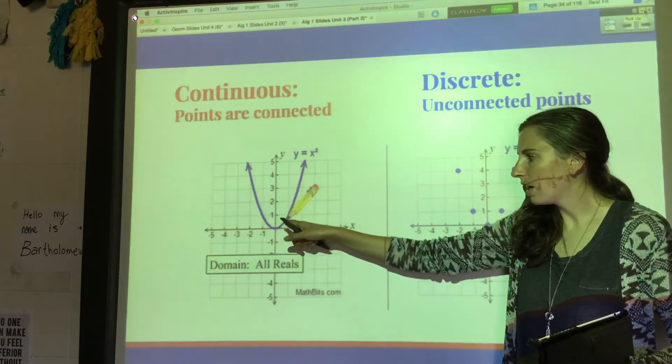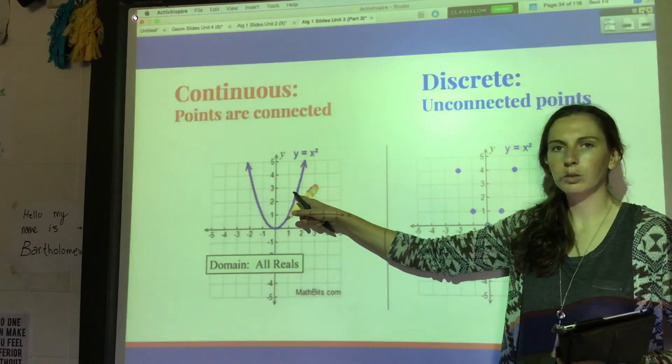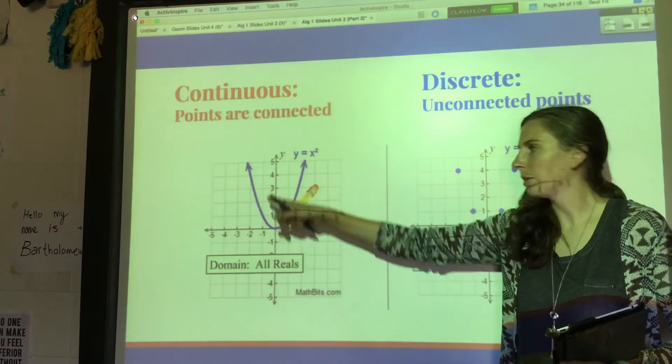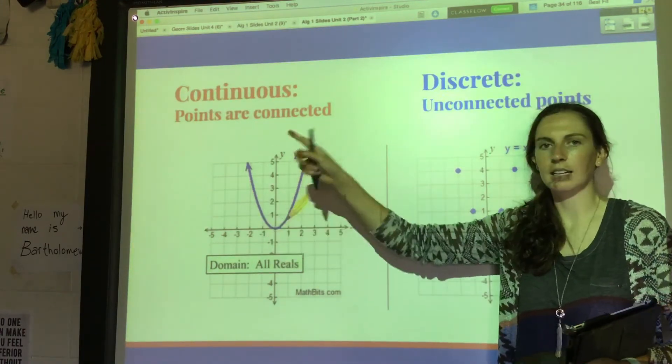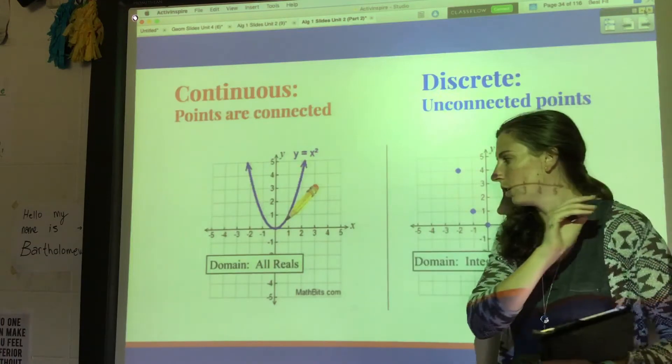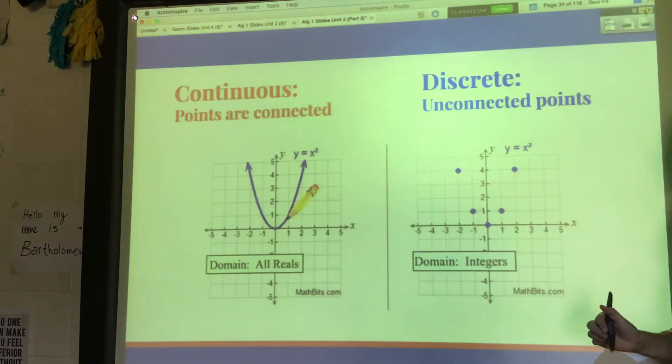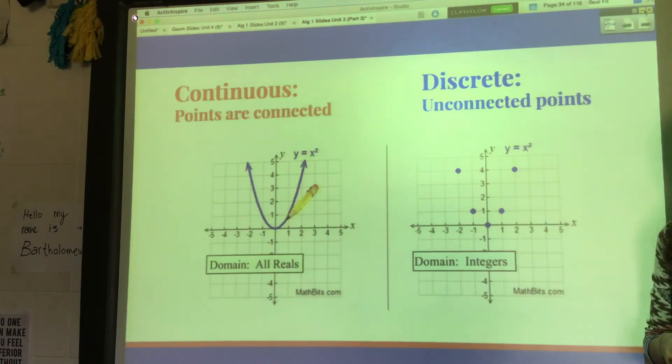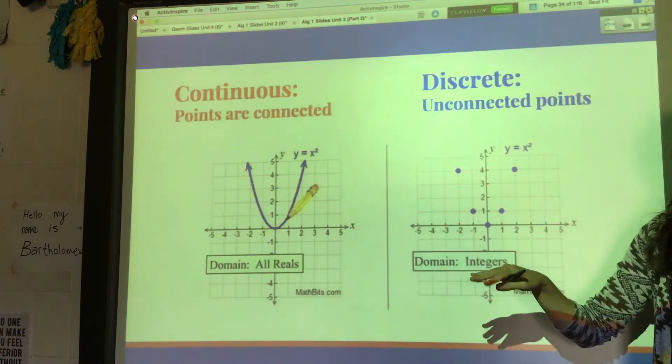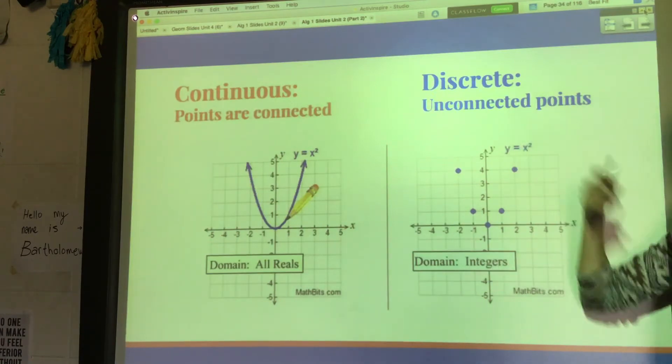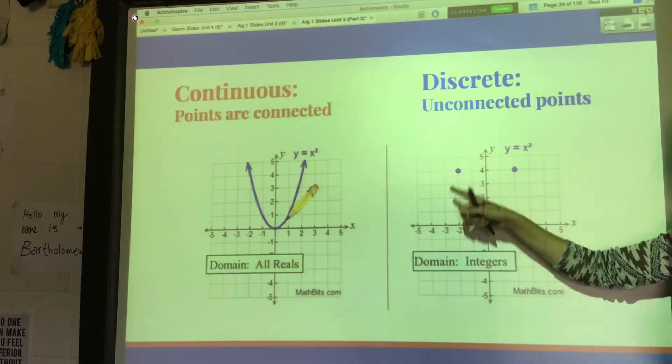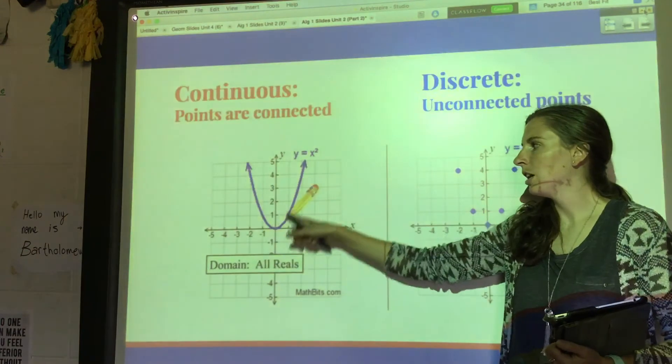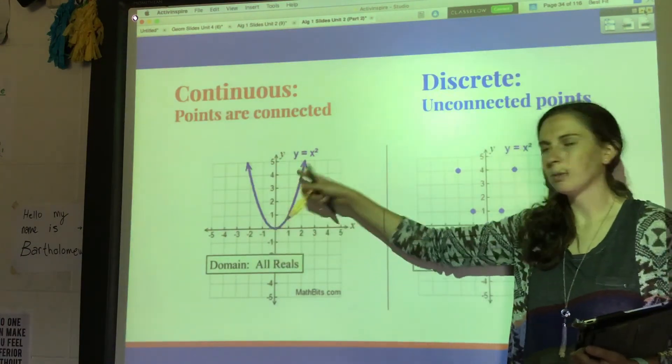This is a bunch of points that are so close together that you can't even see them - they just make one continuous line that you could draw with one stroke of the pencil. Whereas sometimes you don't want that. Sometimes you just want discrete values. Discrete means like separate, not the same, unconnected points.